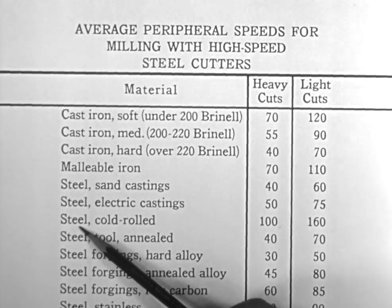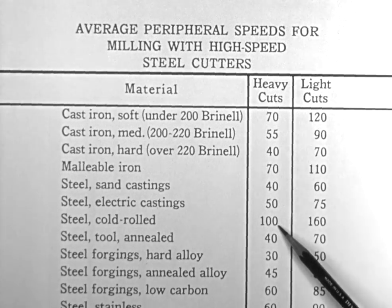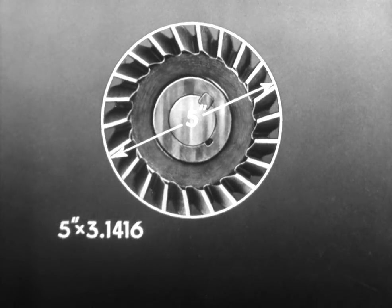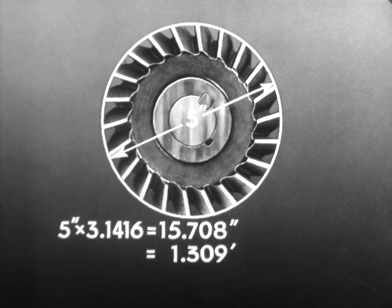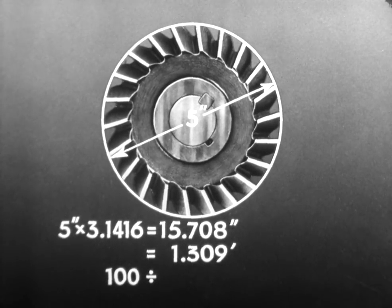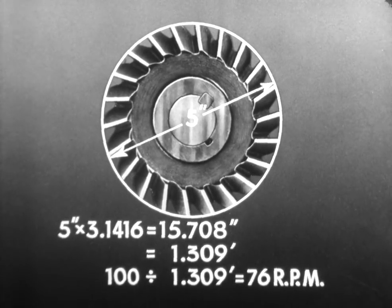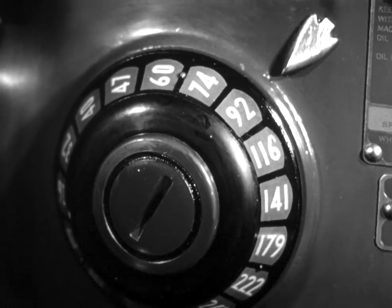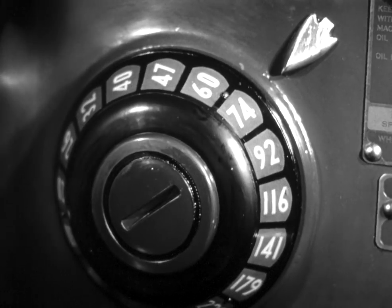A conservative cutting speed for cold rolled steel is one hundred surface feet per minute at the teeth of a high-speed cutter, the type being used on this job. The cutter is five inches in diameter, giving a circumference of five times pi, which is fifteen and seven hundred and eight thousandths, or about one and one-third feet. The feet per minute at the cutting teeth, one hundred, divided by the circumference, roughly one and one-third feet, equals the desired number of revolutions per minute, seventy-six. The nearest available spindle speed settings are seventy-four and ninety-two RPM. Since a three-sixteenths cut, the depth of the keyway is rather heavy, select the slower speed, seventy-four.